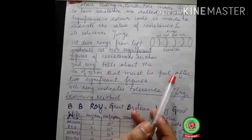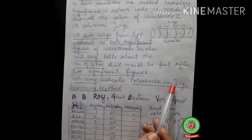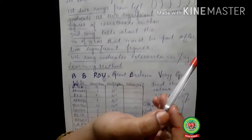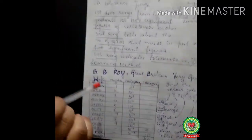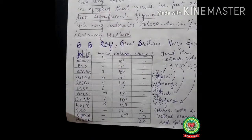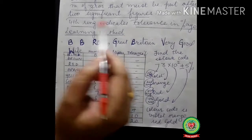The fourth ring indicates the tolerance in percentage. Again, temperature increased or decreased. But before doing all these things, we should know how to make the table and where we will tell all such things. BB Roy Great Britain Very Good Wife is the way to learn this table.